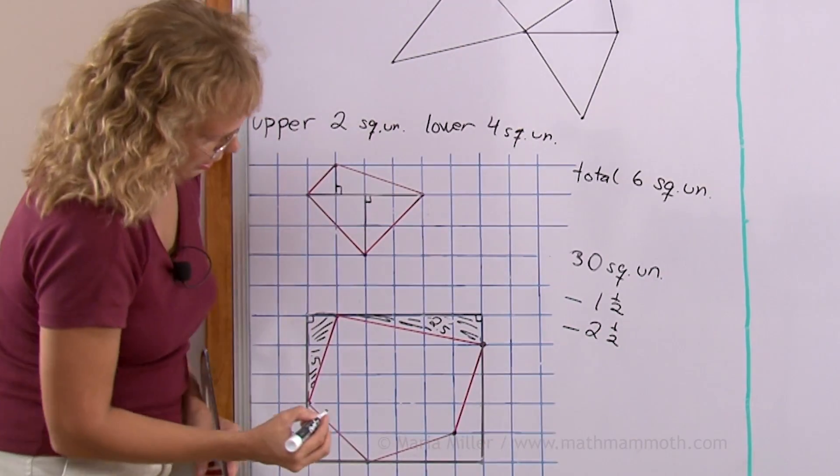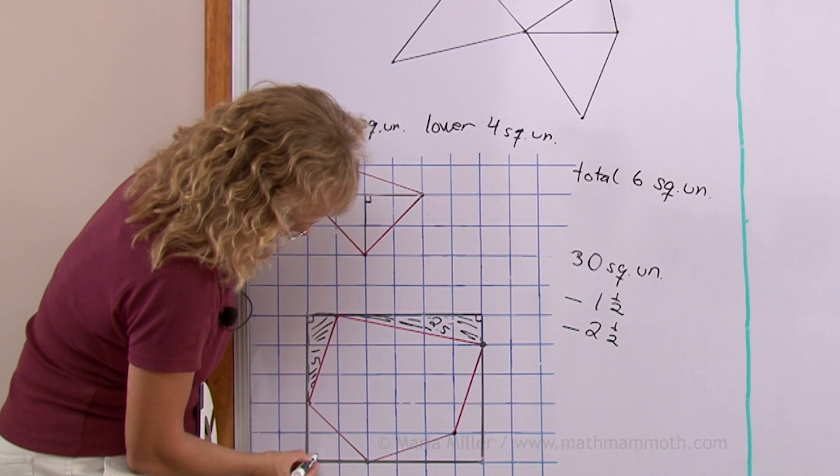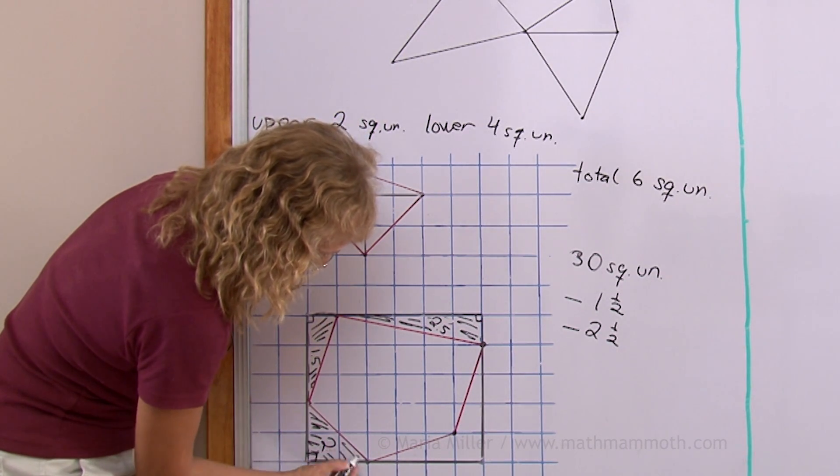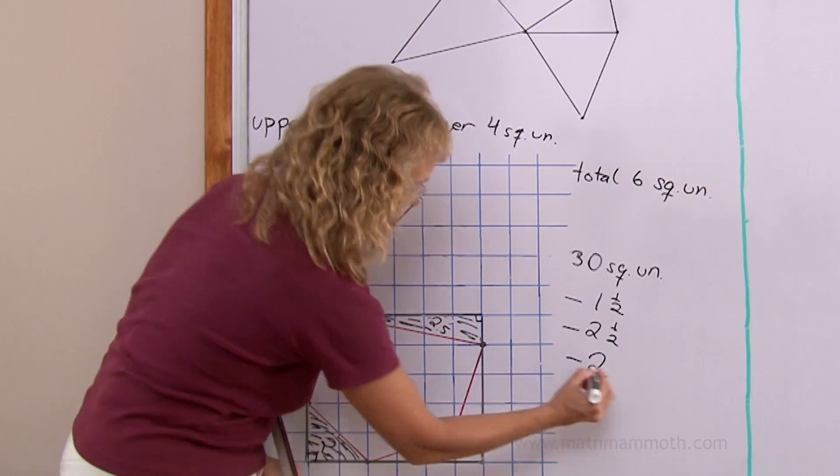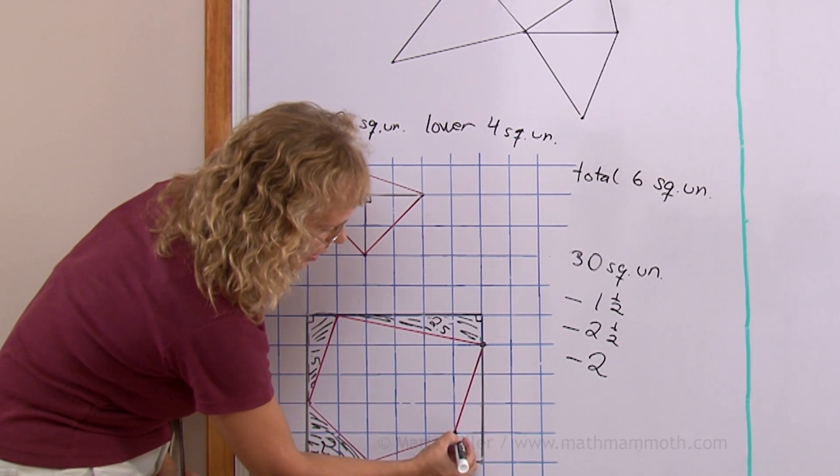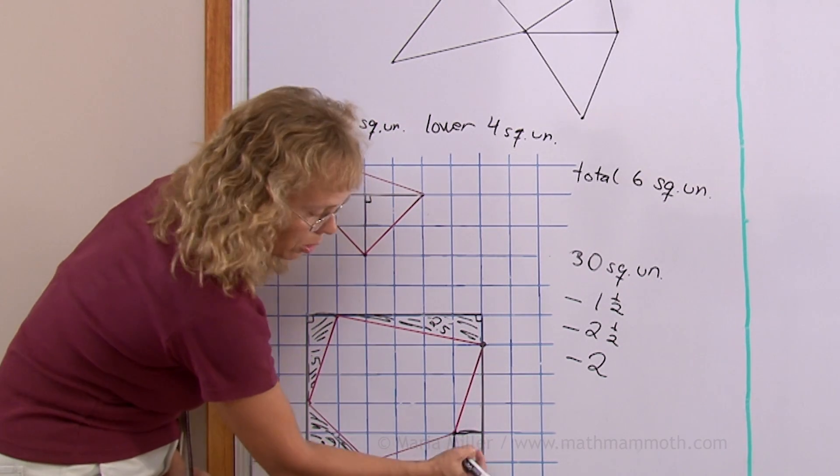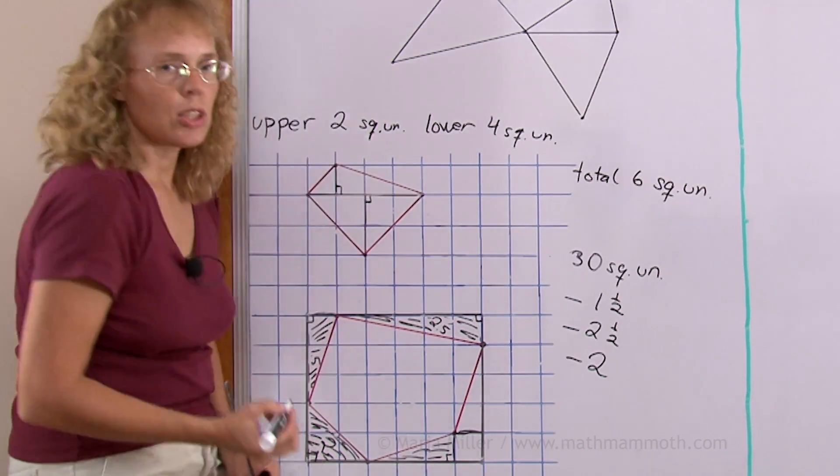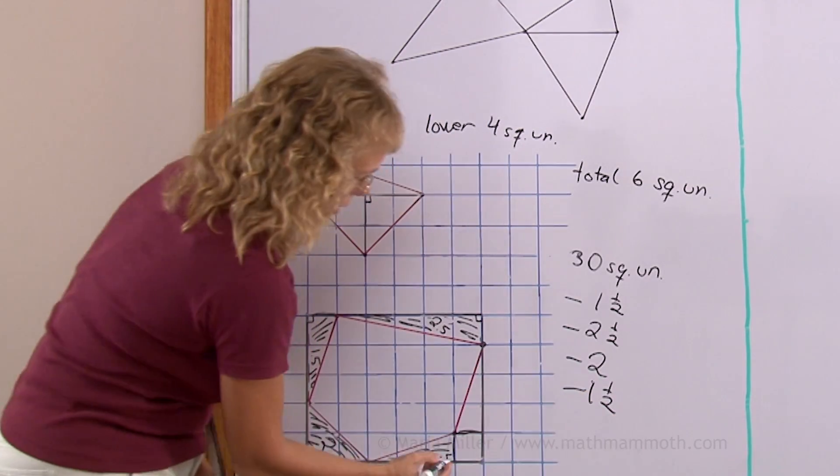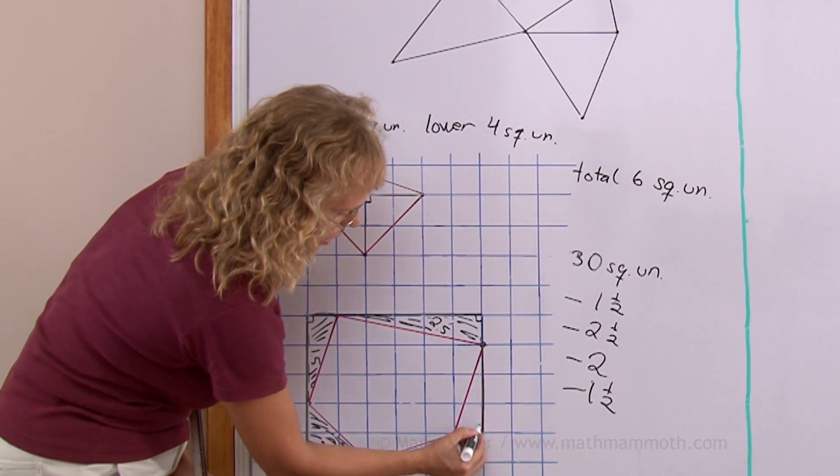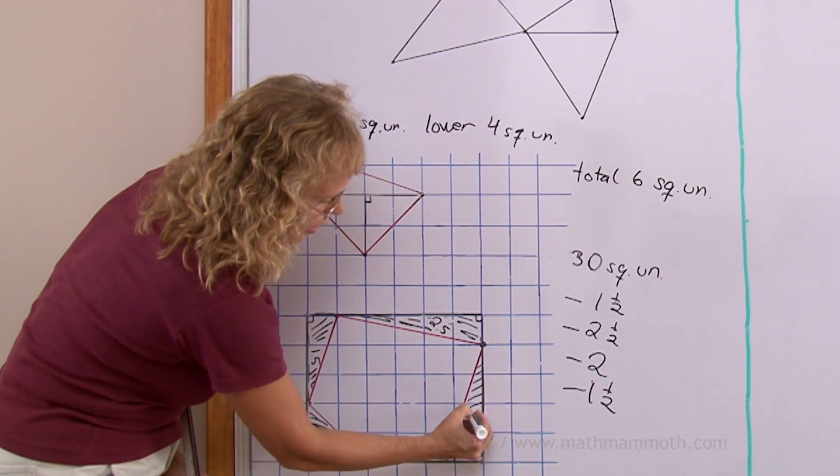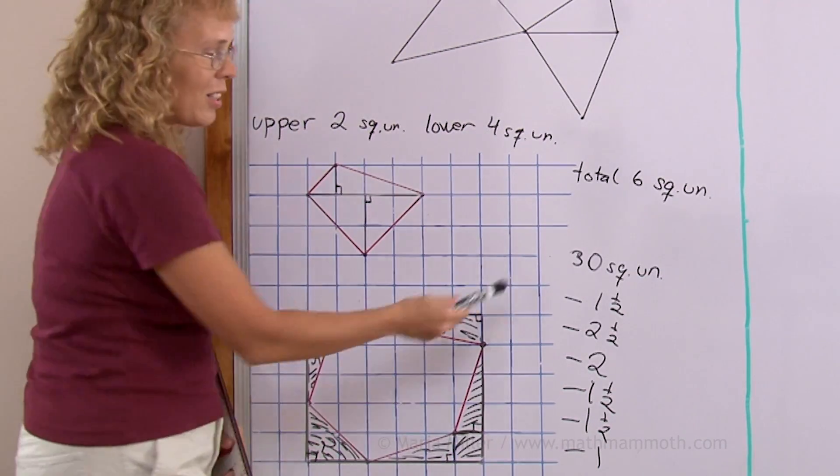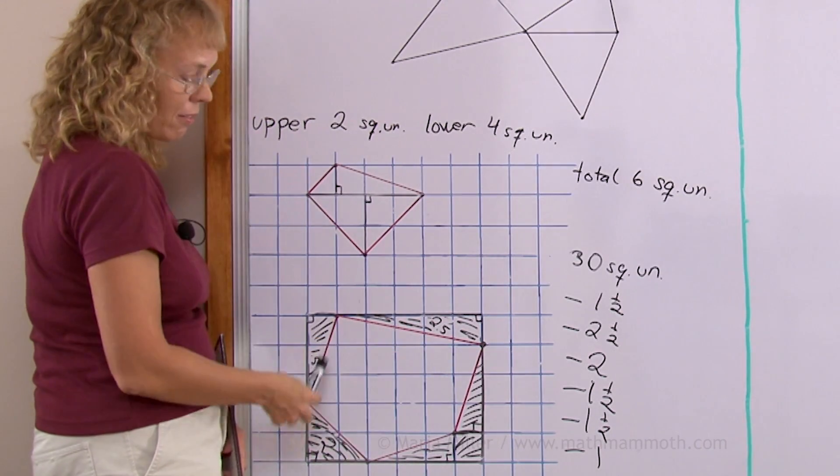Over here I have a right triangle, two times two is four divided by two is two square units. Then over here we have an odd shape but I can divide it into right triangles and a square. This right triangle is three times one so its area is 1.5. Then this square and this triangle, so this one has an area of 1.5, two, and then this one is one more.